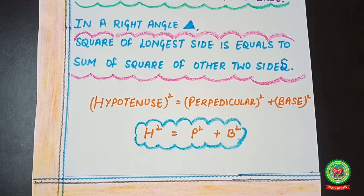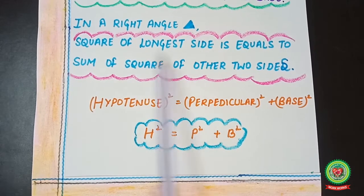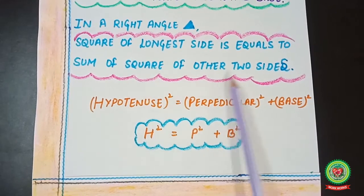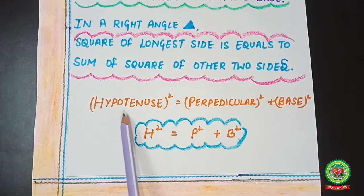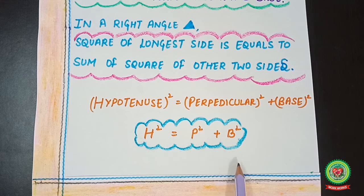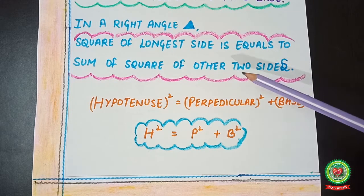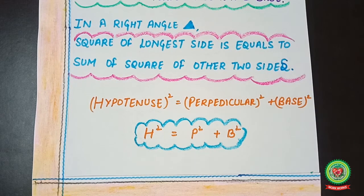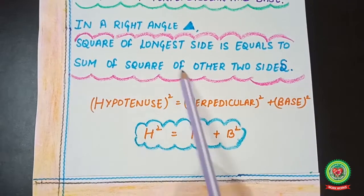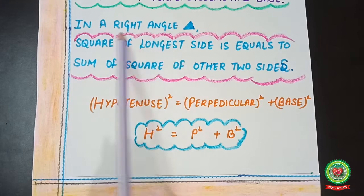First, let's recall the Pythagoras theorem. In a right angle triangle, the square of the longest side equals the sum of the squares of the other two sides — that means hypotenuse squared equals perpendicular squared plus base squared, or h² = p² + b². Now, the opposite of that theorem means if this property is satisfied, then the triangle is a right angle triangle.